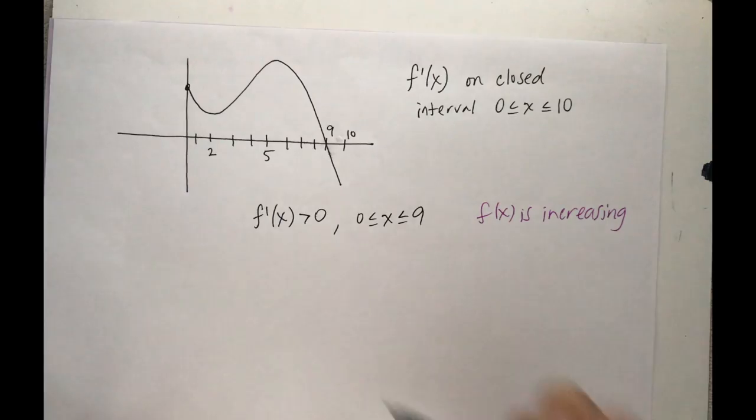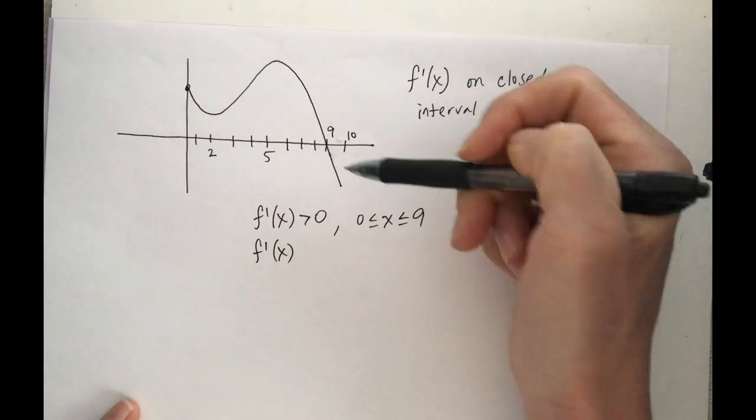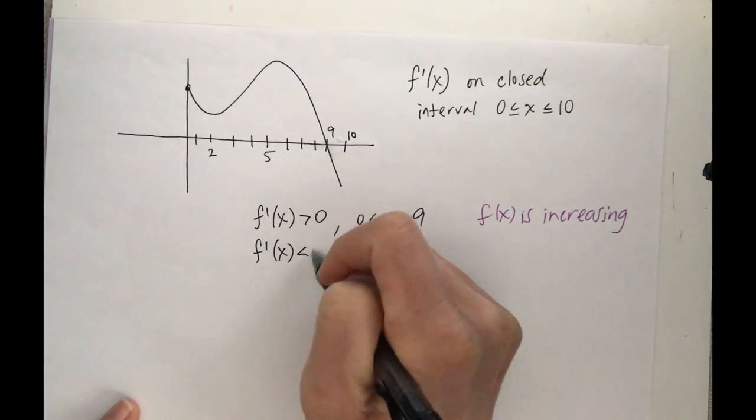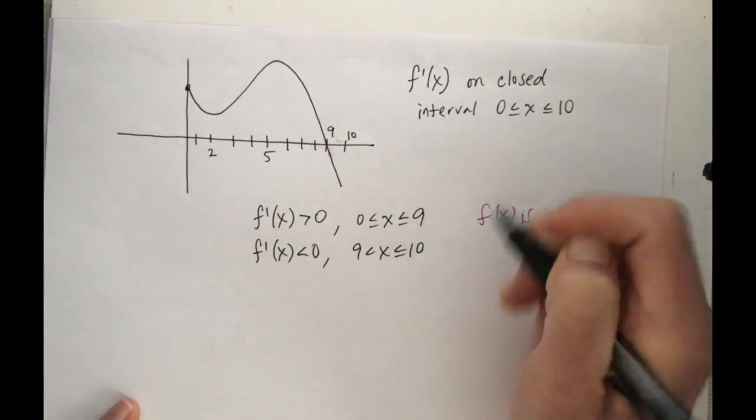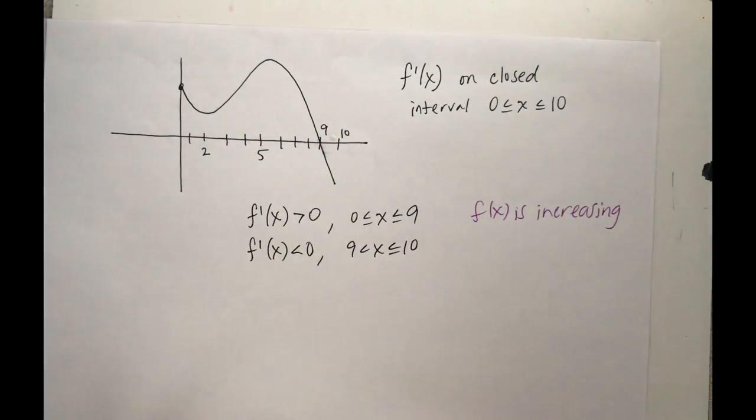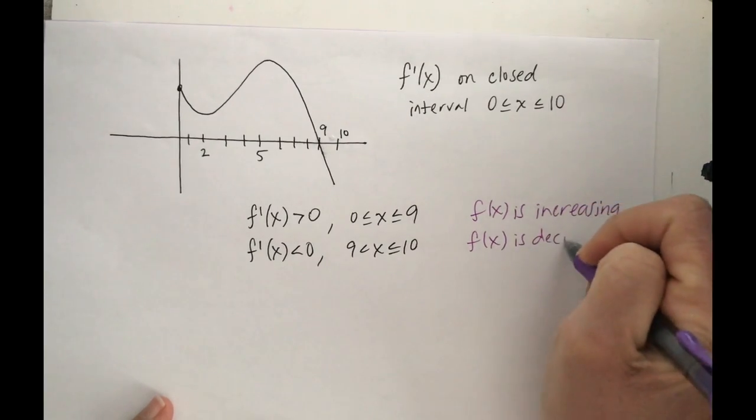Awesome. Now let's go a step further. f'(x), the graph of this derivative, this function itself, is below the x-axis. It's negative from 9 to 10. And if my derivative is negative, that means my function is decreasing.